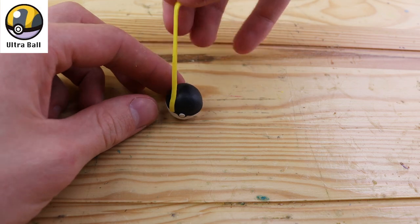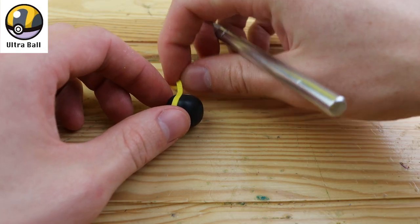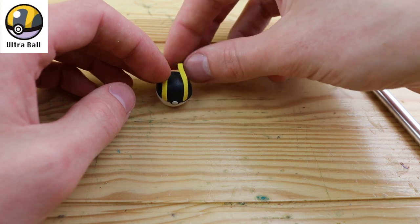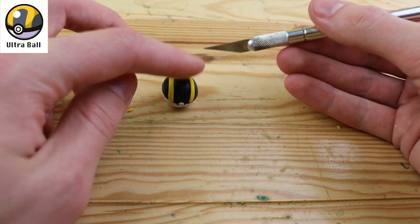The ultra ball is one of those classic pokeballs that's been around since the very first generation. This one gives you a double catch rate while using this pokeball.